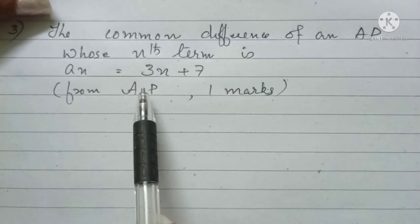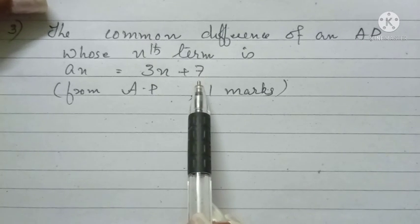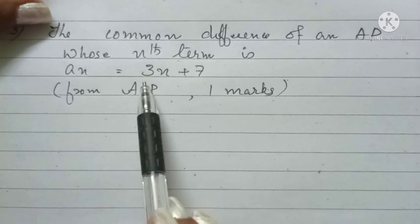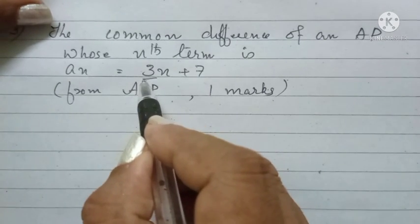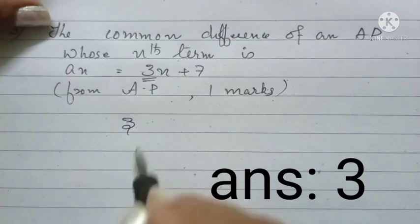Here, the AP is written as AN plus 7. Directly, we can find the common difference. Here, the common difference is coefficient of N. Therefore, its answer is 3.